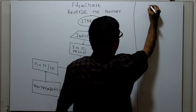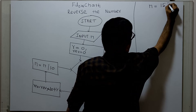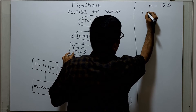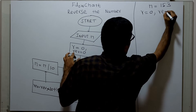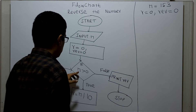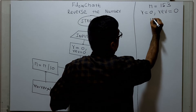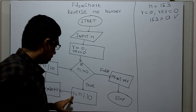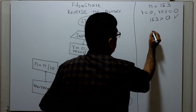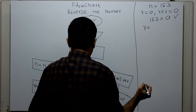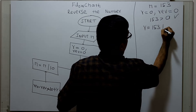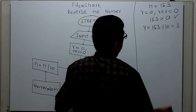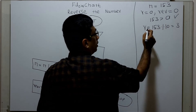Start, input n. I am giving the value 153. R equal to 0, REV equal to 0. Checking: 153 greater than 0 — this is true. Then remainder: R equal to 153 mod 10. When you divide 153 by 10, the remainder is 3. So 3 is stored in the variable R.